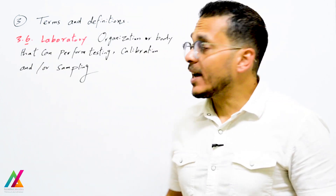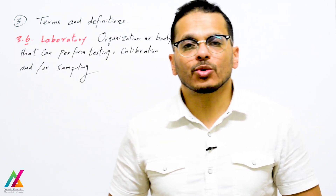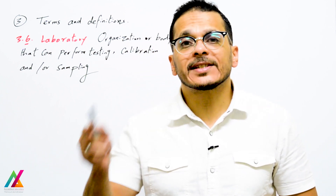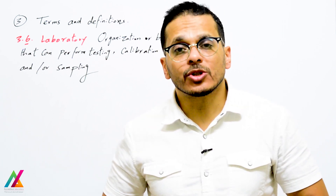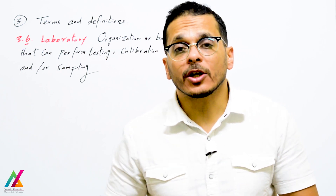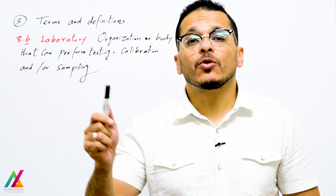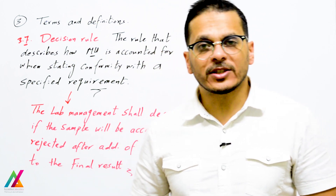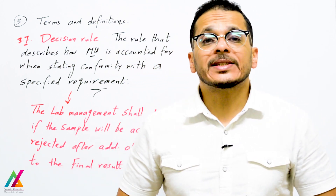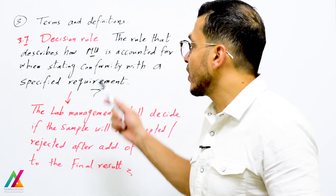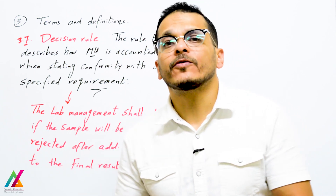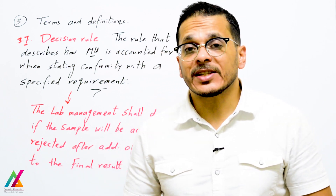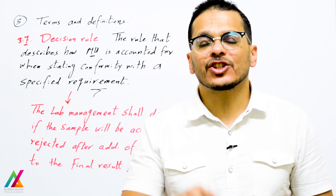The definition of laboratory is an organization or body that can perform testing, calibration, and/or sampling. Sampling was added in this edition, so if the lab is responsible for the sampling process, they must apply all document requirements for testing, calibration, and sampling. Decision rule is another important concept added in this edition — it is the rule that describes how measurement uncertainty is accounted for when stating the conformity of a sample with a specified requirement.